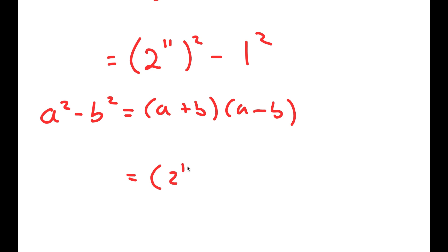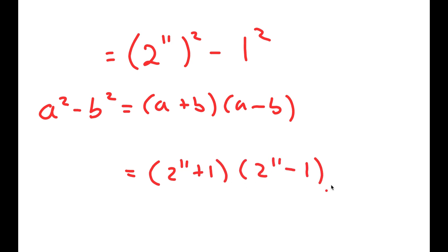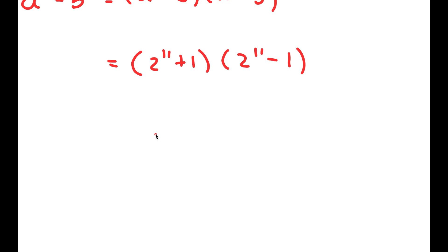So this can equal 2 to the power of 11 plus 1 times 2 to the power of 11 minus 1. And now this is equal to 2,049 (2 to the power of 11 is 2,048) times 2,047, which I can rewrite as 2,000 plus 49 times 2,000 plus 47.